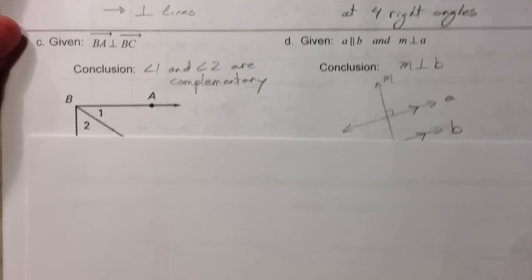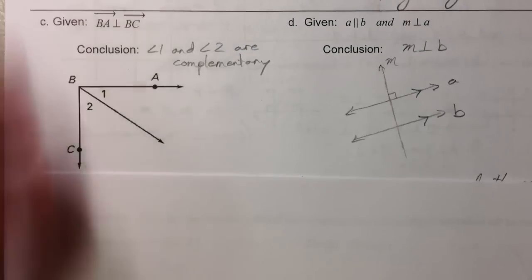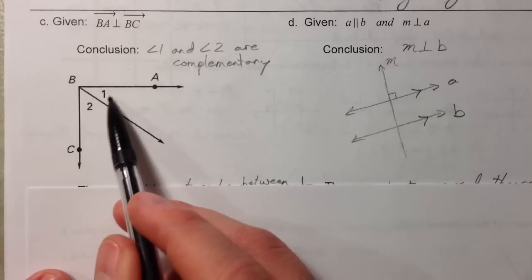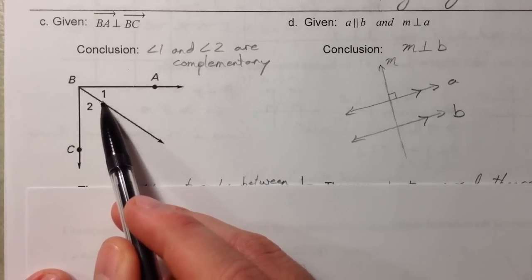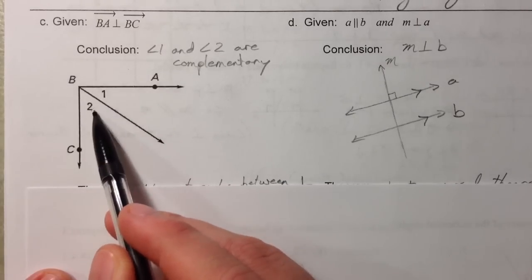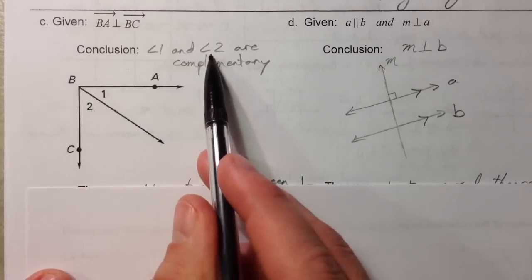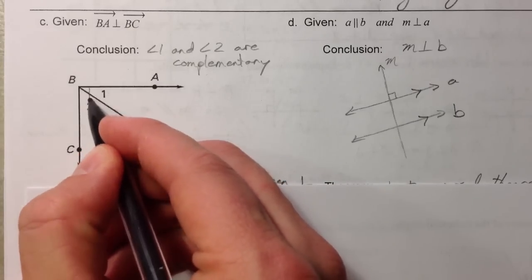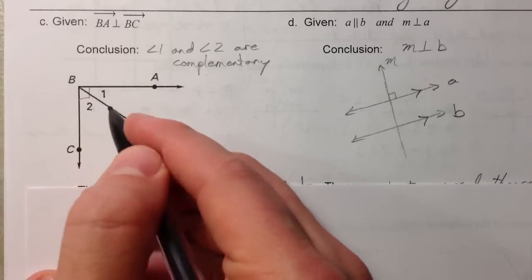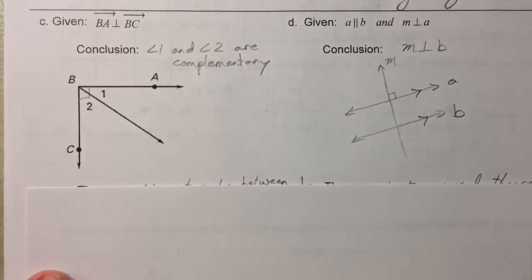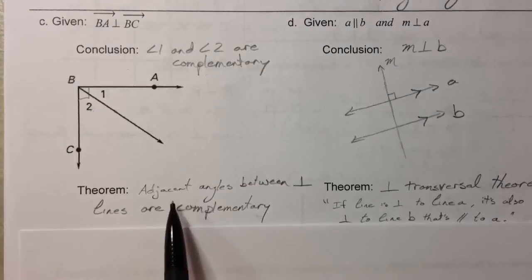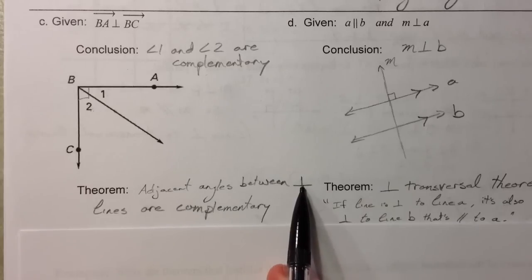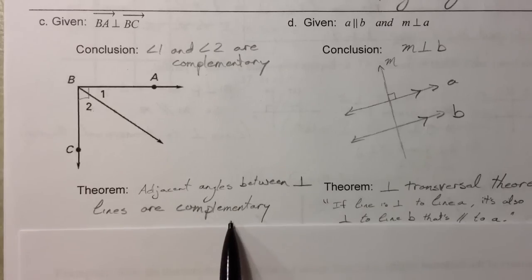If you have two lines that are perpendicular and you've got adjacent angles inside of there, you know that they're two complementary angles, because you know that this is a right angle, so you know they add up to 90. I call this 'adjacent angles between perpendicular lines are complementary.'